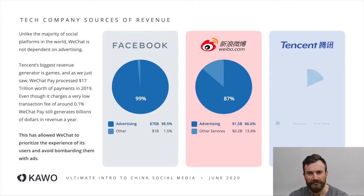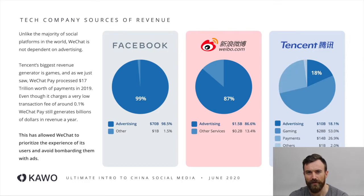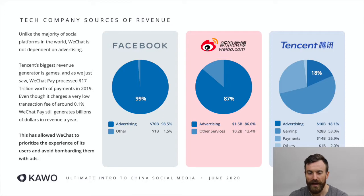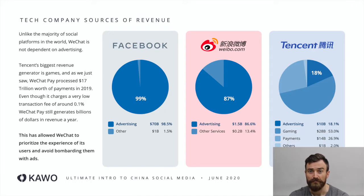Meanwhile Tencent makes only 18% of its revenue from advertising. There are two main categories of revenue that are even bigger than advertising: their gaming revenue from people buying virtual goods inside games, but then crucially their mobile payments revenue. I'm going to say that I think WeChat is one of the most user-centric social platforms in the world because they are less conflicted than these average advertiser-driven business models.